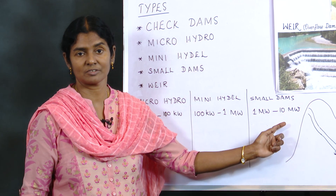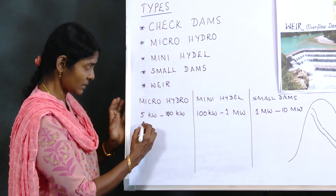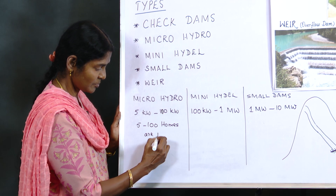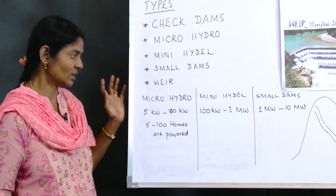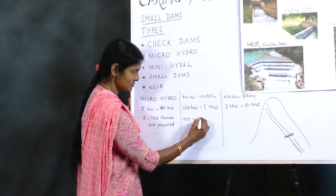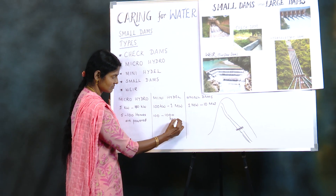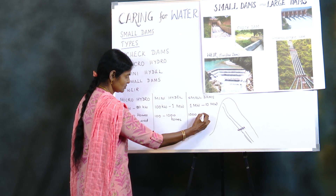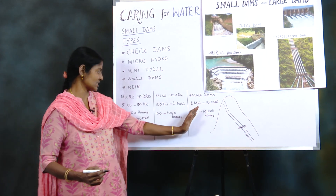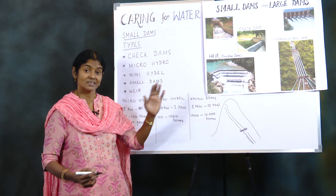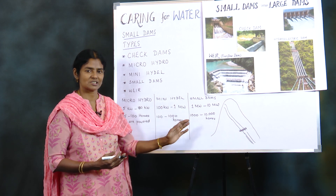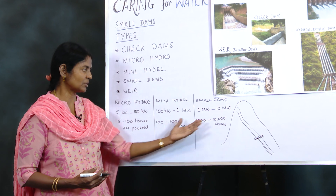Mini hydel can generate from 100 kilowatts to 1 megawatt, and small dams can generate from 1 megawatt to 10 megawatt. In terms of homes powered: micro hydro can power 5 to 100 homes, mini hydel can power 100 to 1,000 homes, and small dams can power 1,000 to 10,000 homes. If the water flow is really good, they can also sell the extra current to the national grid - that is the advantage of all three.